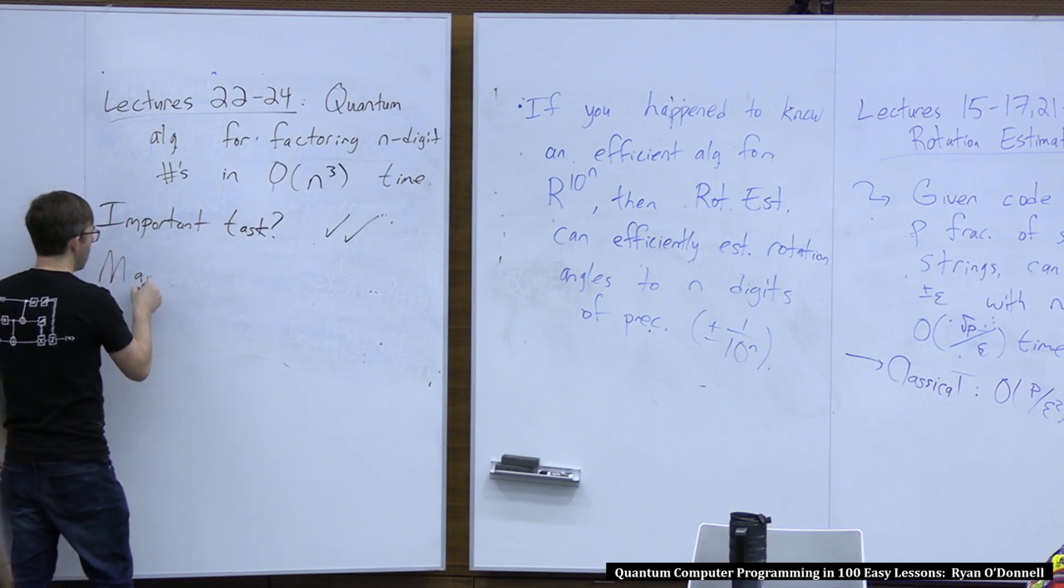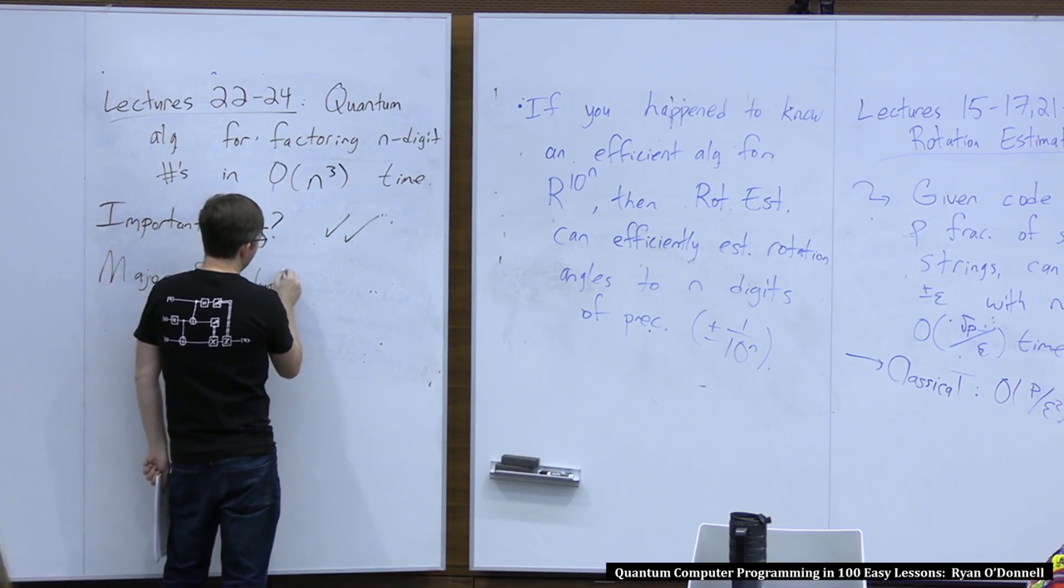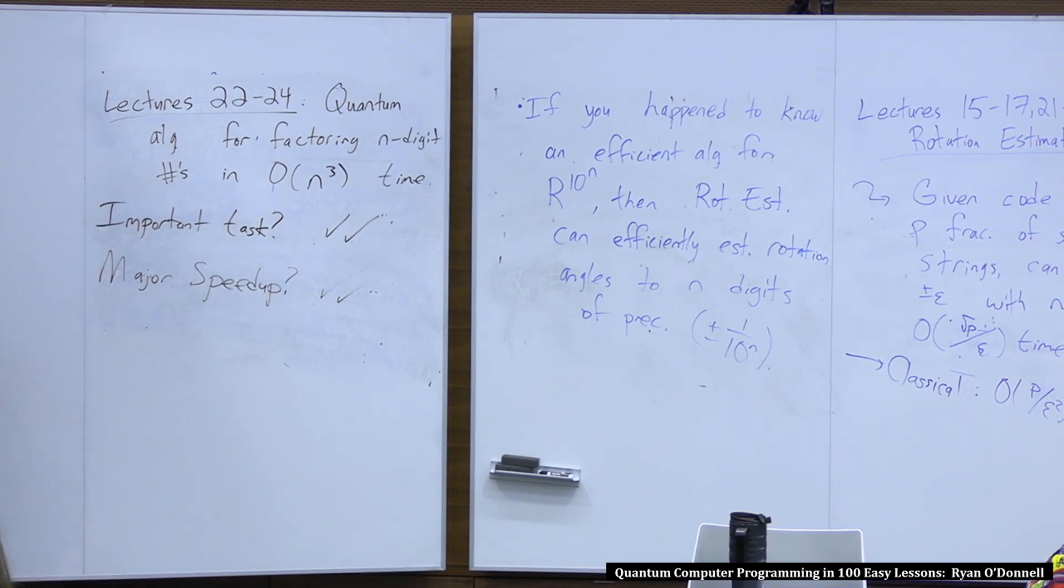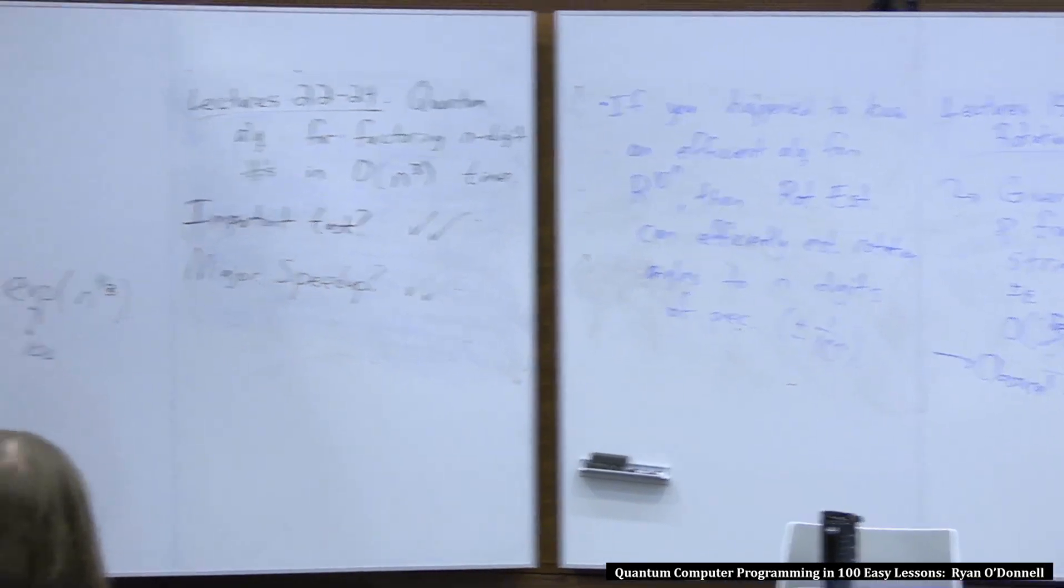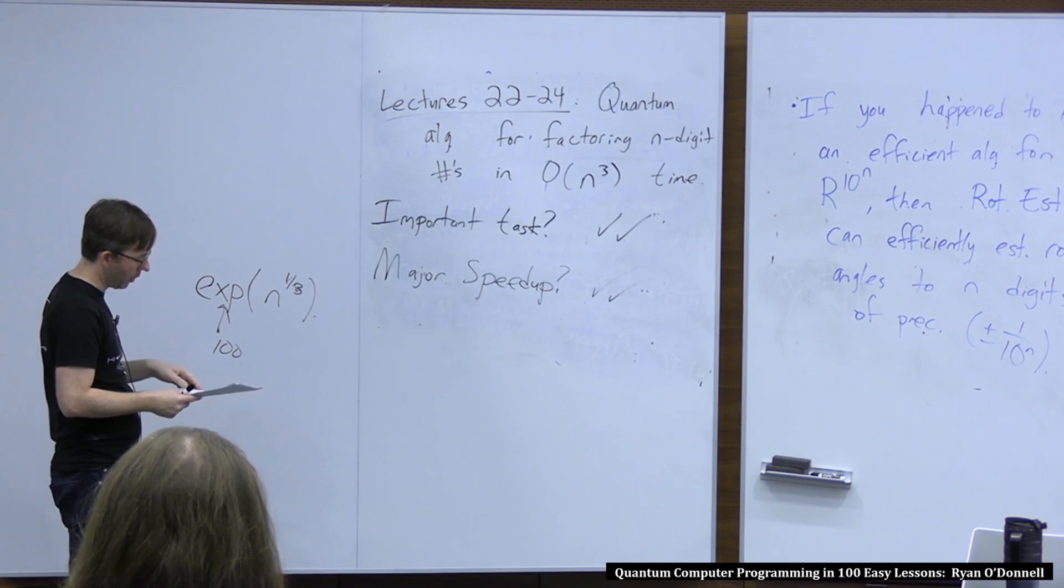Is this a major speed-up? Yeah, it's also a major speed-up because it's a polynomial time algorithm. And the best classical algorithms we know have some running time that's exponential. Not in N, but it's basically exponential in the cube root of the number of digits. Well, also, the base of the exponential is really large. So it's an infeasible algorithm once N is, I don't know, 500 or something.